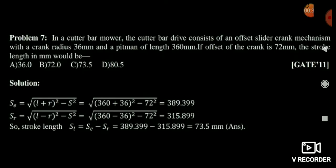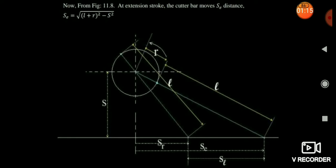Now see the questions — your concepts will become clearer. Here the crank radius is 36 mm, the pitman length is 360 mm, and the offset of crank is 72 mm. It is asking to calculate the stroke length. The stroke length is nothing but SE minus SR — distance covered in extension stroke minus distance covered in retraction stroke. SE equals the square root of (L plus R) squared minus S squared.